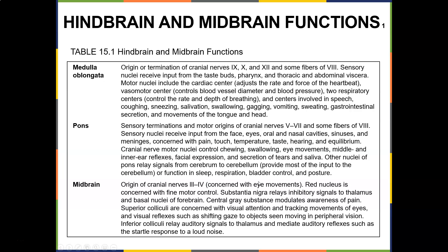Here's a table summarizing what we've covered. The medulla oblongata handles speech, coughing, sneezing, salivation, swallowing, gagging, vomiting, sweating, GI secretions, and movements of the tongue and head. The pons controls chewing, swallowing, eye movements, middle and inner ear reflexes, facial expression, and secretion of tears and saliva. The midbrain handles visual reflexes, movement of the eyes, gazing at objects, and auditory signals.